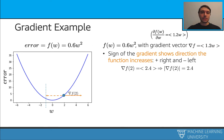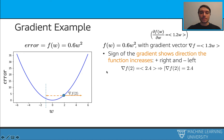Let's calculate these gradients with some examples. We are going to use the same function, 0.6 times w squared. The partial derivative with respect to w gives us 1.2w. This is our gradient. We are going to plug in some values and calculate the gradients at each location. For w equals 2, we get 2 times 1.2, which gives us 2.4. And this is our gradient.